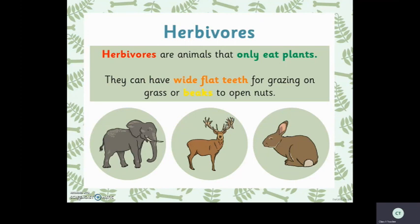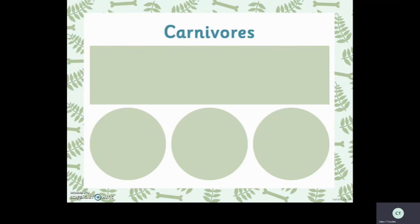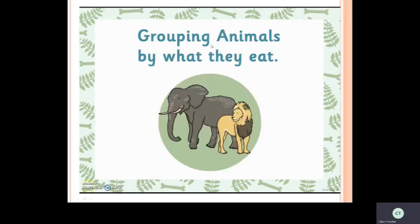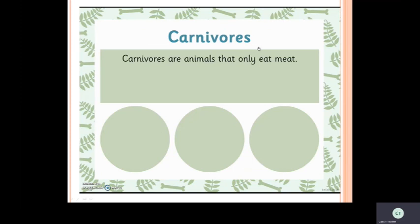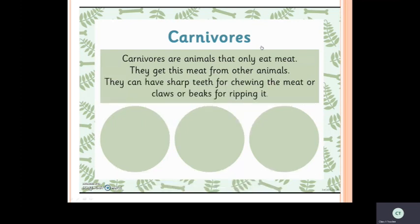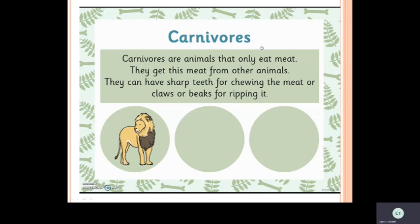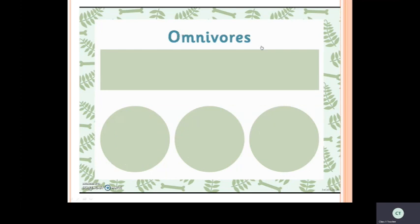Carnivores are animals that only eat meat. They get this meat from other animals. They can have sharp teeth for chewing meat, or claws and beaks for ripping it. Examples include lion, cat, and fox.